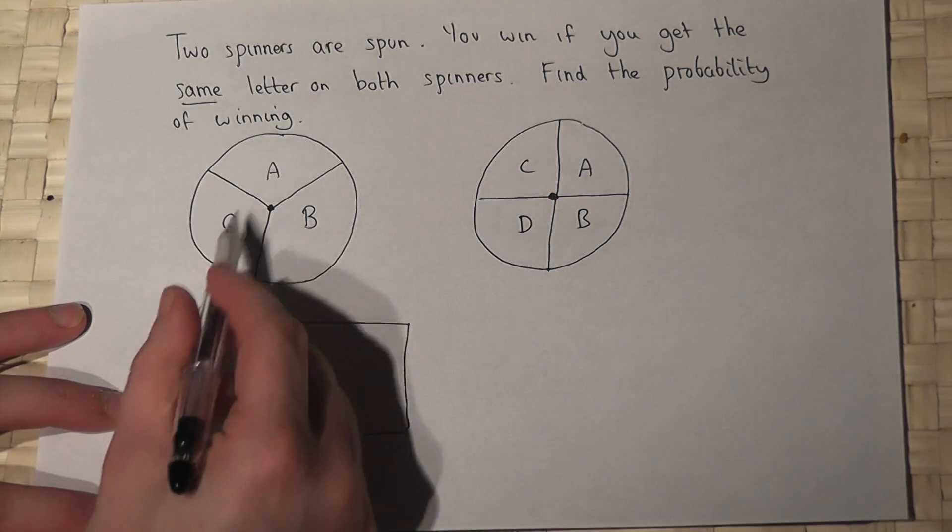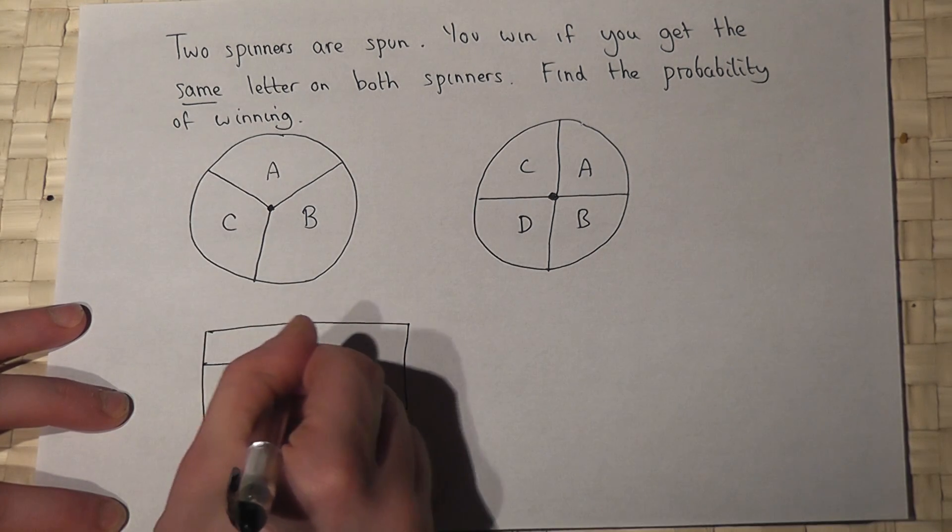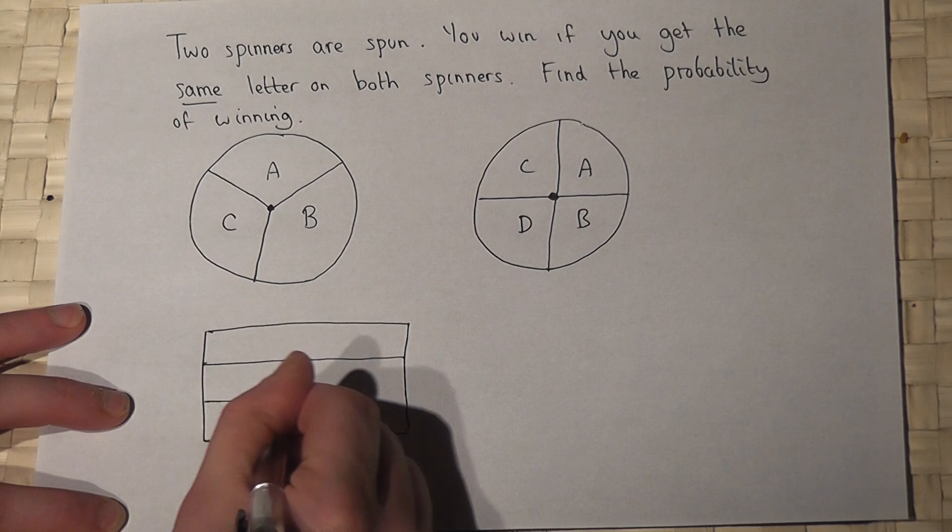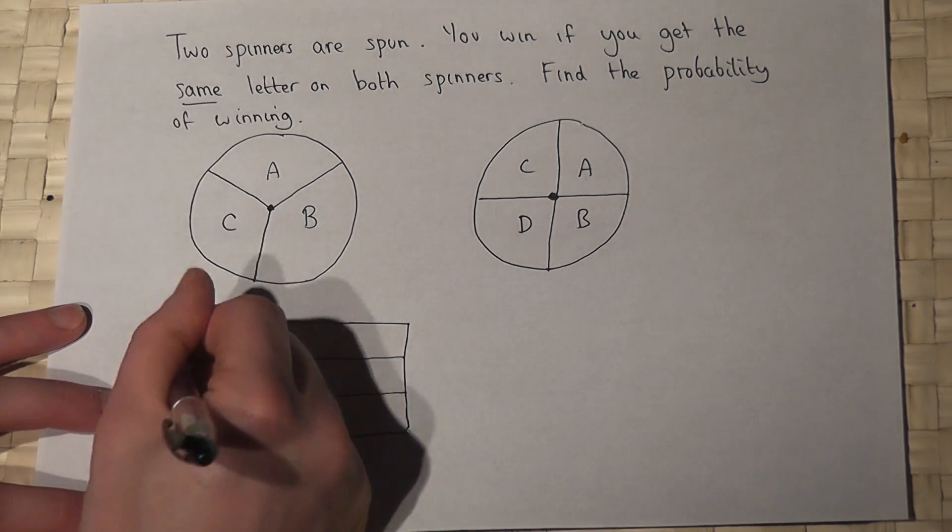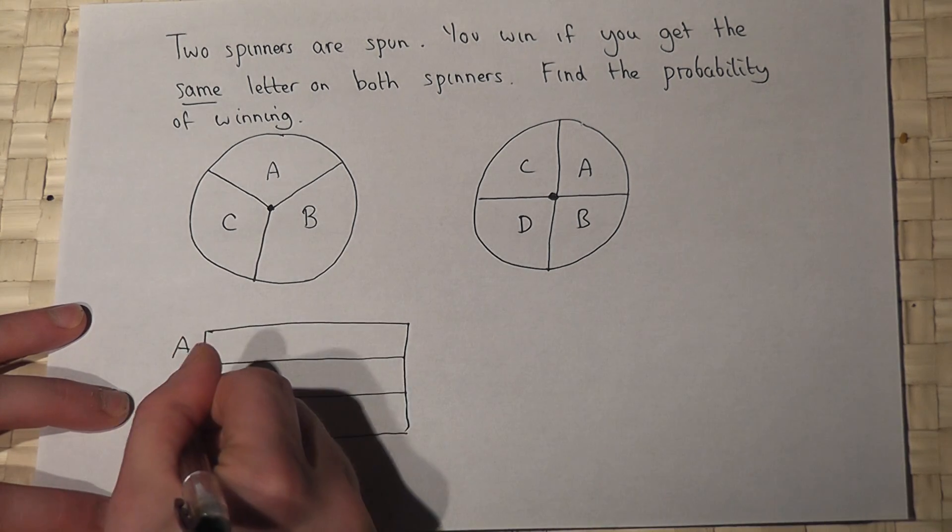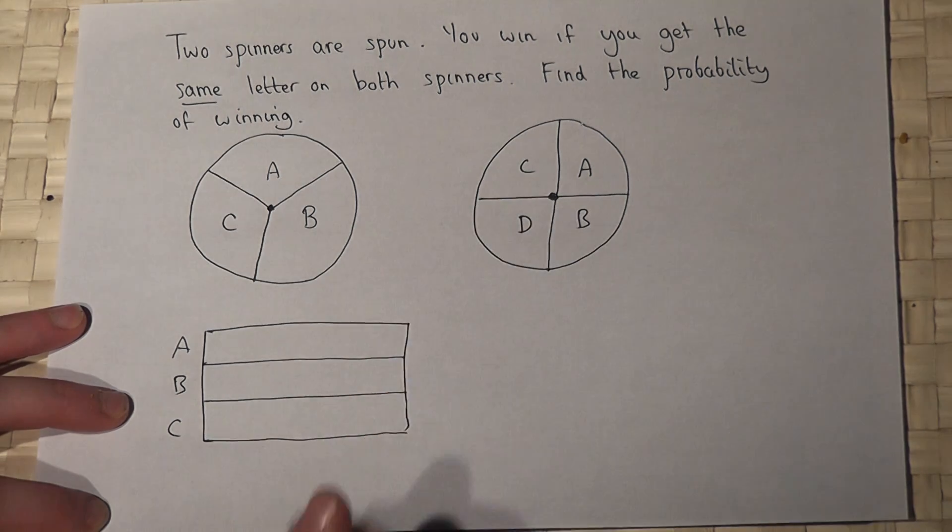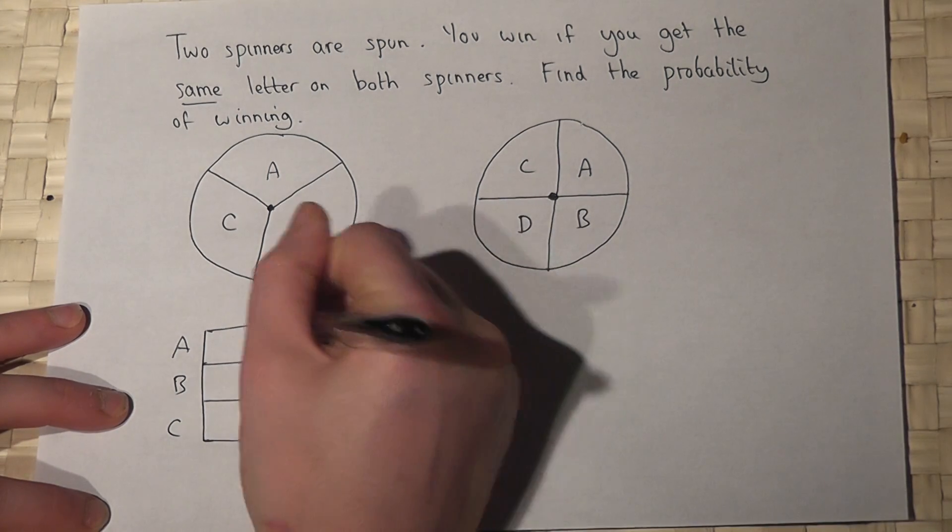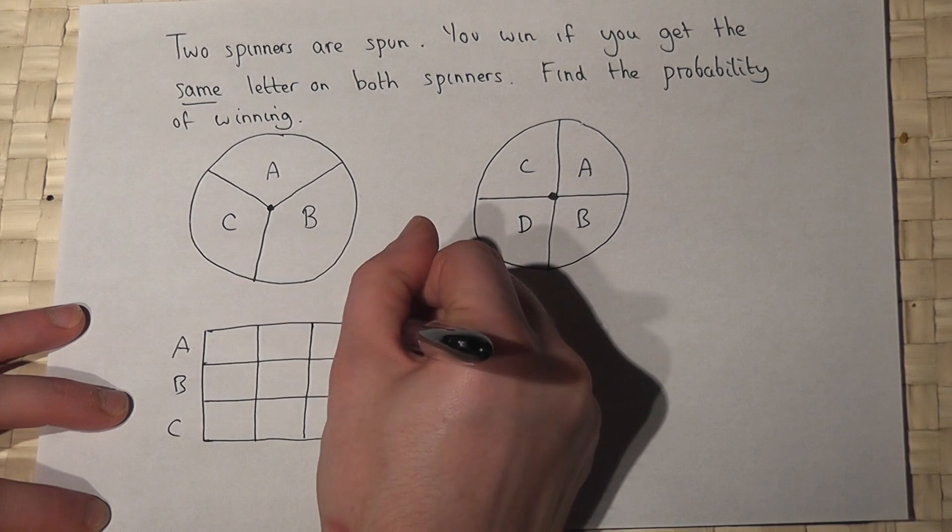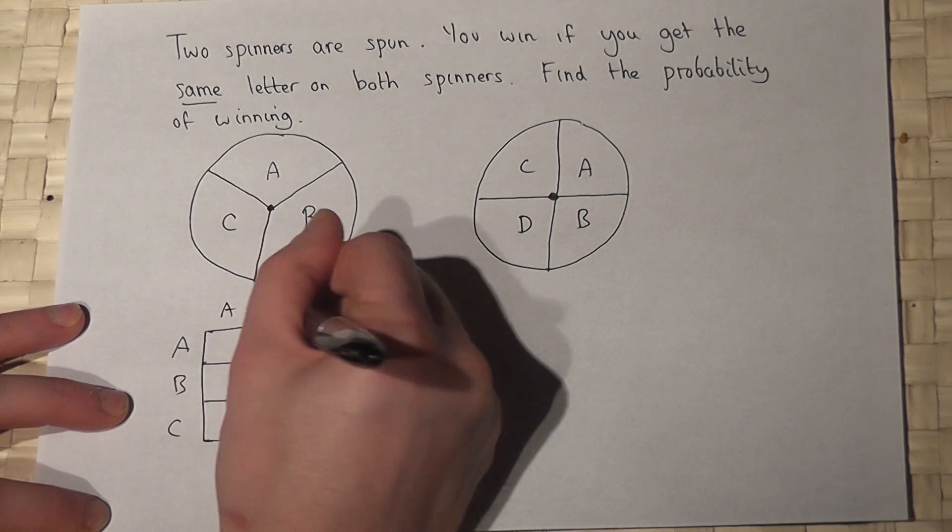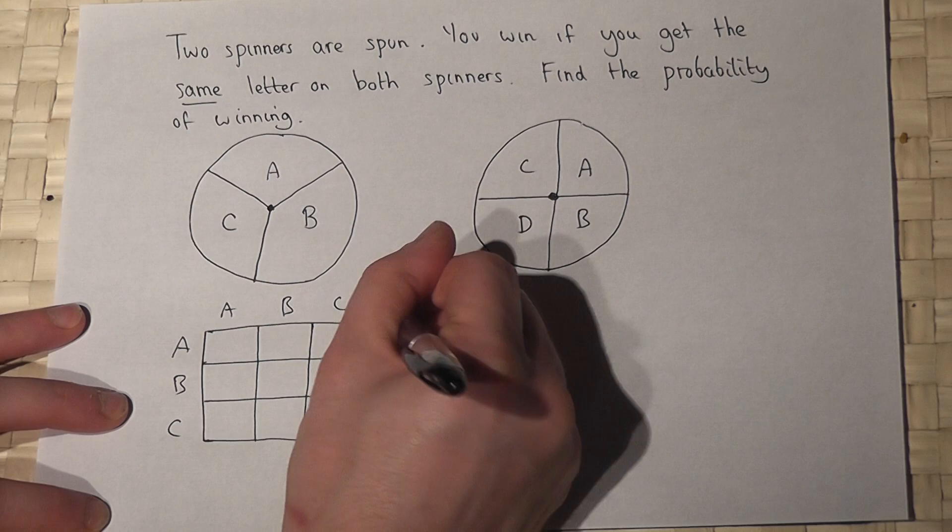Now spinner one's got three sections, so I'll put three rows, and put A, B, C. And spinner two's got four sections, so I'll put four columns, and put A, B, C, and D.